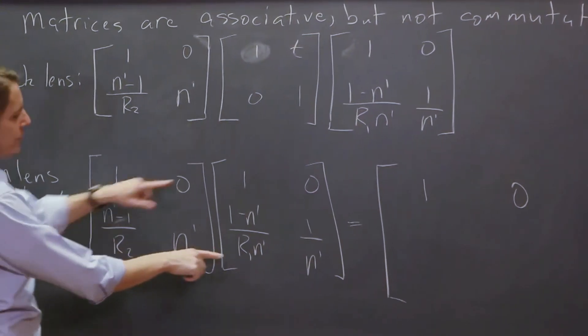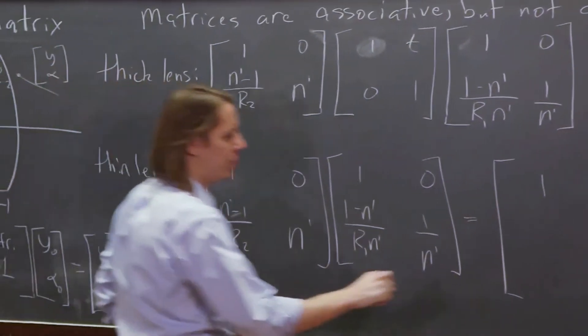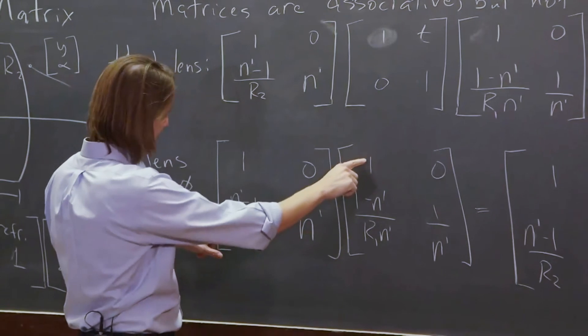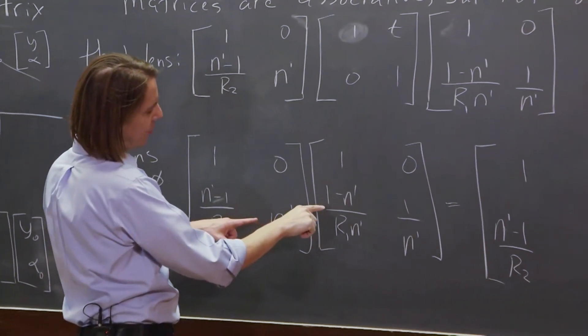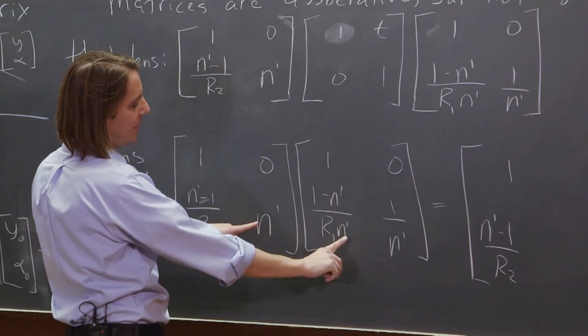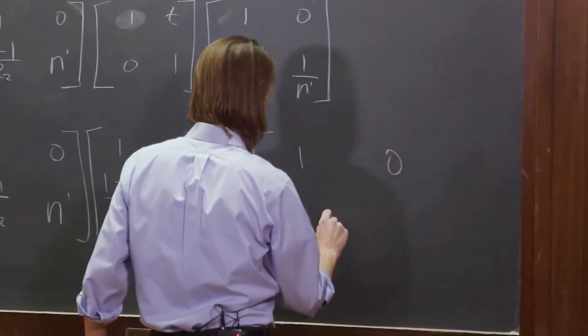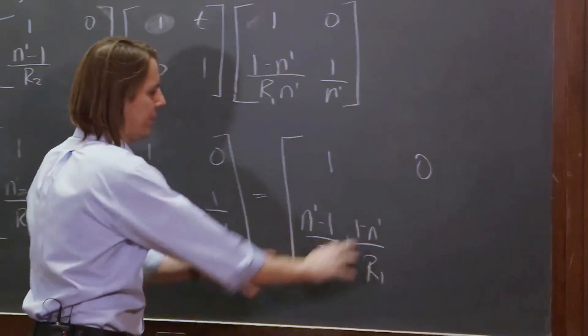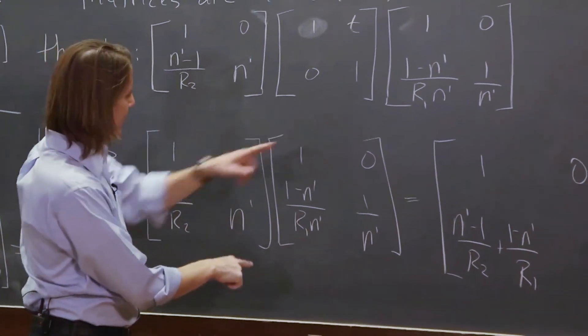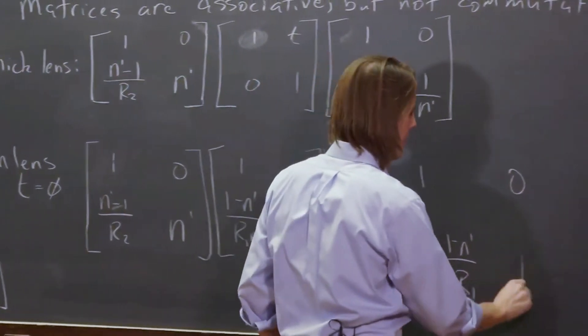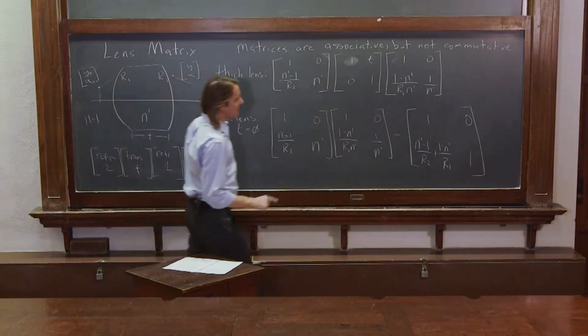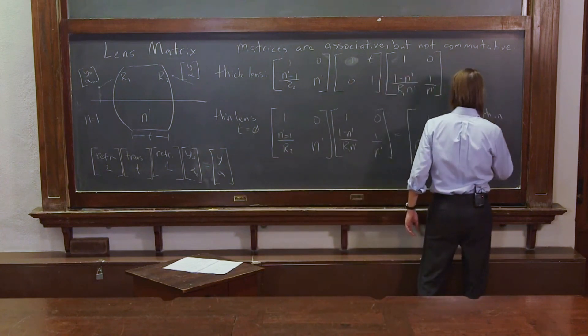And then here, these two times these two. So this is n prime minus 1 over r2. That's that times that. Plus n prime times 1 minus n prime over r1 n prime. So what's going to happen is this is going to cancel that one. So it's plus 1 minus n prime over r1. That's that whole term right there. And then the last term is this times this 0. n prime times 1 over n prime is 1. This is the thin lens matrix.